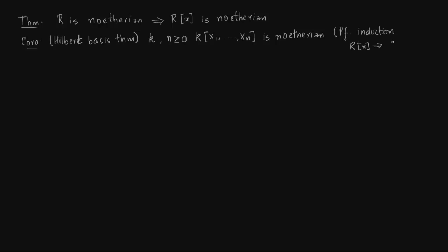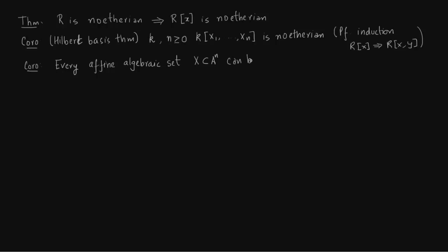The next corollary is immediately relevant: every affine algebraic set X in affine n-space Aⁿ can be defined by finitely many polynomials.